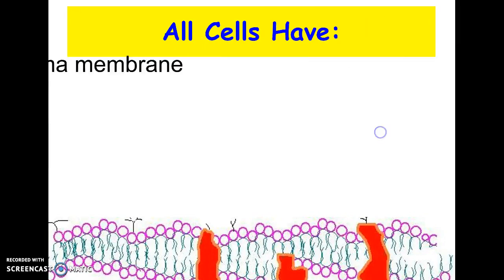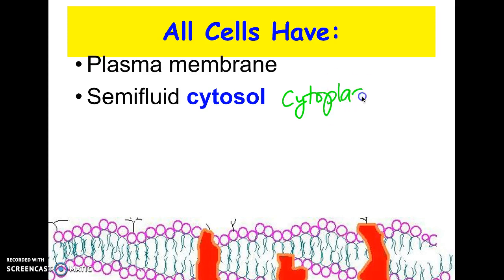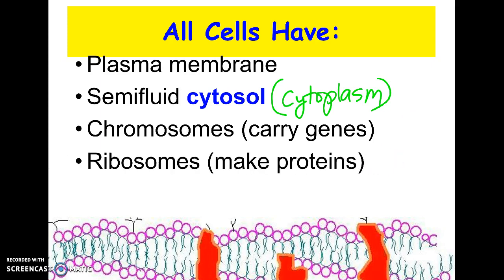To wrap everything up: what do all cells have in common? All cells basically share four things. They all have a cell membrane that surrounds them. They all have cytosol, which you may have heard called cytoplasm. They all have DNA, which is found on chromosomes — though not necessarily in a nucleus. And last but not least, all cells have ribosomes, because they can't manufacture proteins without them. Even the simplest bacteria have these four cell parts in common with you.